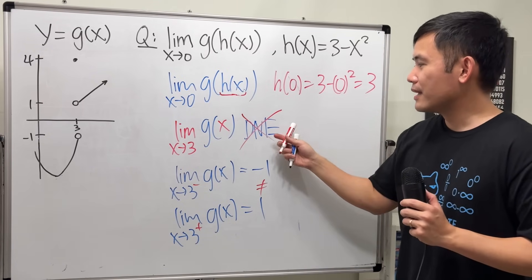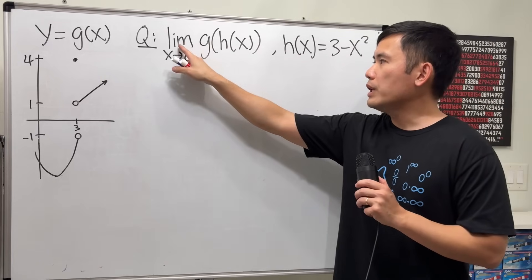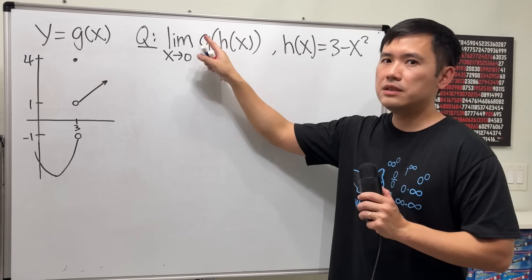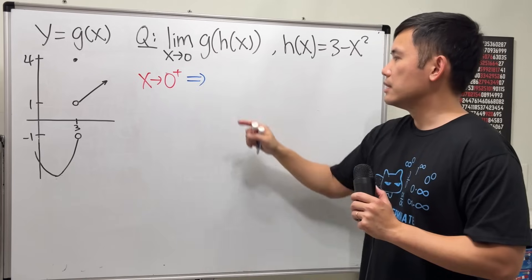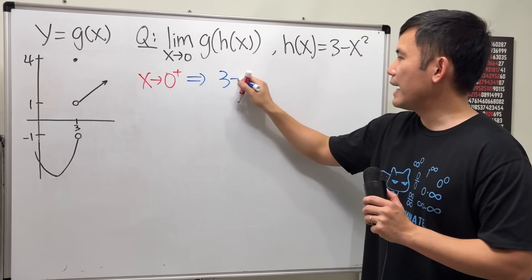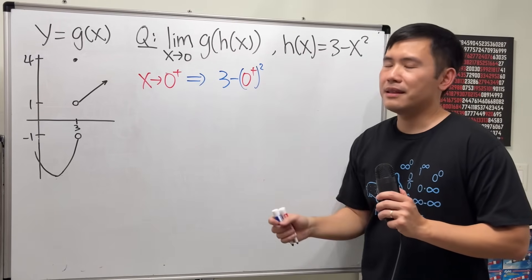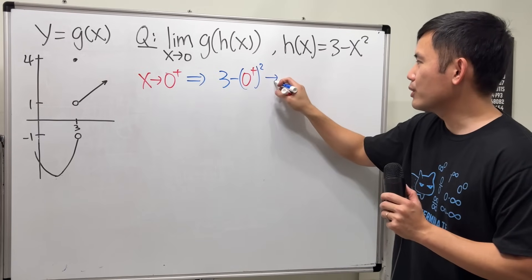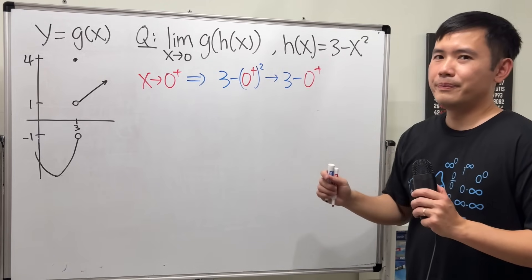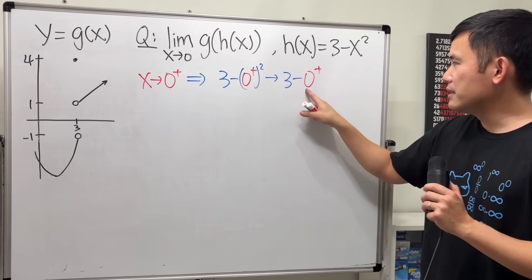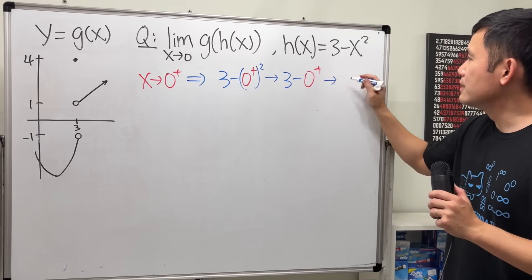Now let's talk about why this is wrong. The mistake was: when x is approaching 0, do not plug in exactly 0 into the h function, because when we have a limit as x approaching some number, make sure you do both directions. If you have x approaching 0 from the positive direction, plugging 0+ into h gives 3 minus (0+) squared. Now 0+ is just a number a little bit bigger than 0. When you square that, it's still a little bit bigger than 0. So this is approaching 3 minus 0+, which is a number a little bit less than 3 — we end up with 3 minus.